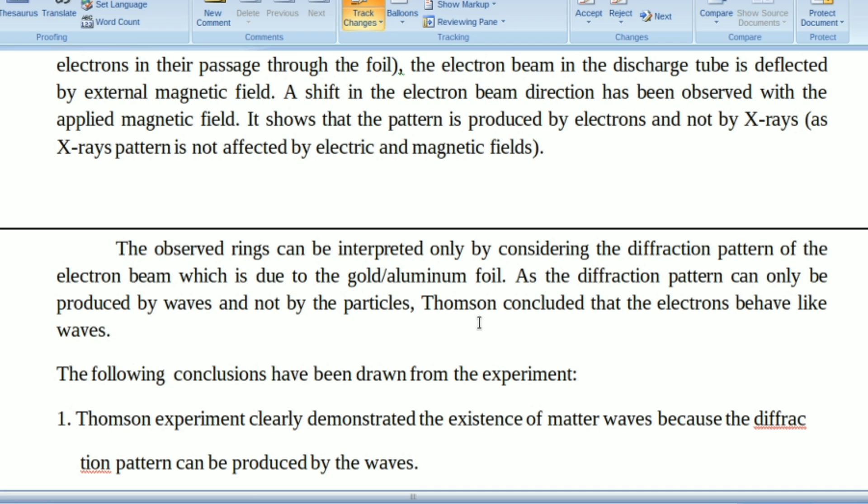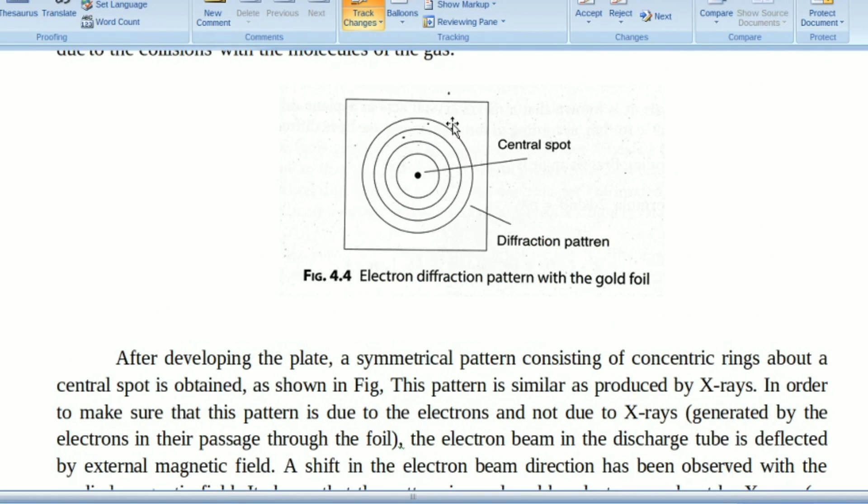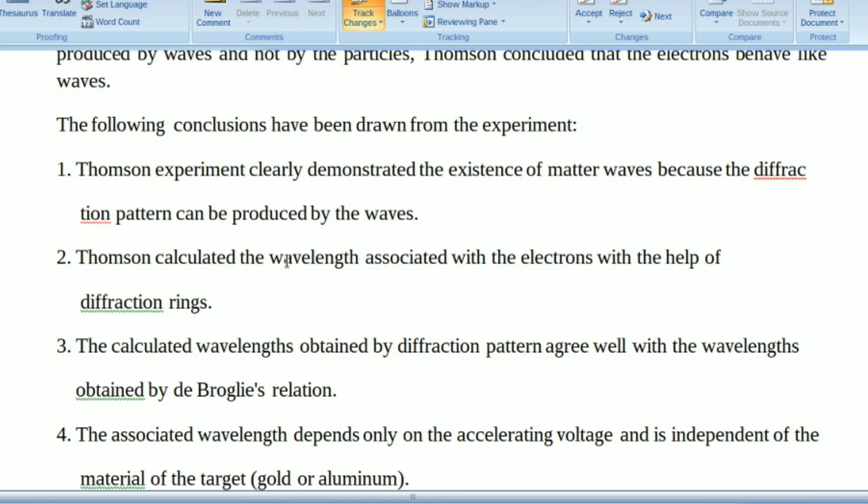According to ancient theory, electrons are particles, but Thomson concluded that electrons behave like waves. The following conclusions have been drawn from this experiment. Thomson's experiment clearly demonstrated the existence of matter waves, because the diffraction pattern can be produced by waves. These electrons also have the nature of light.